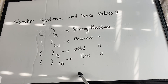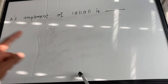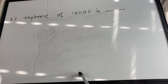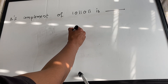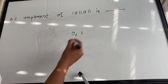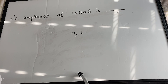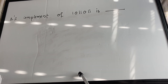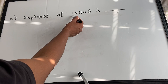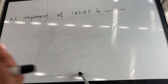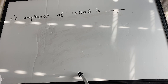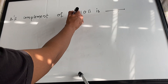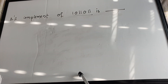Now the question is: what is the two's complement of a given binary number? In binary number systems, we only have digits zero and one — all binary numbers are combinations of zeros and ones. Before finding the two's complement, we first need to find the one's complement. To find the one's complement, take all the digits and toggle their values.